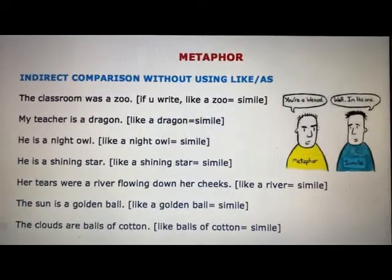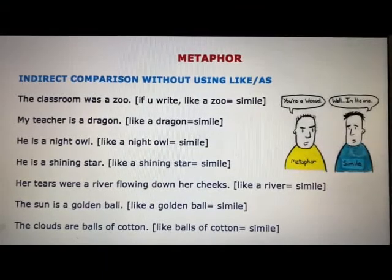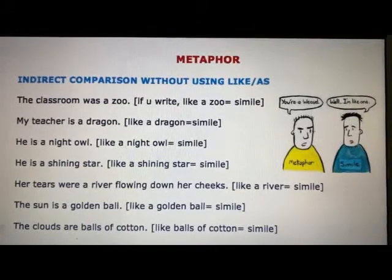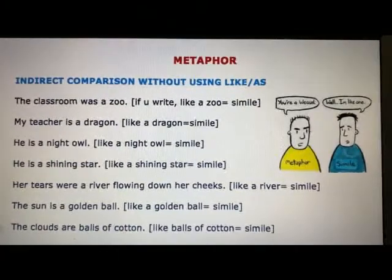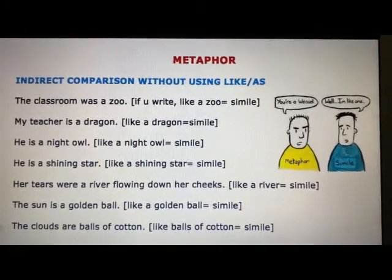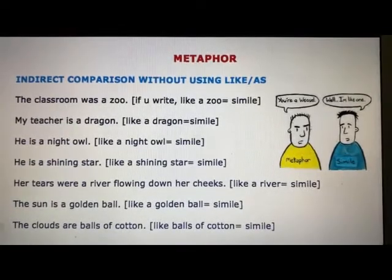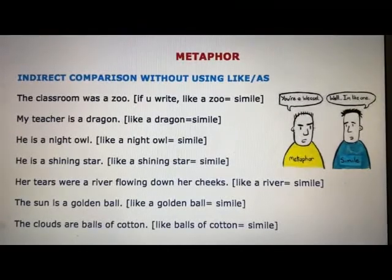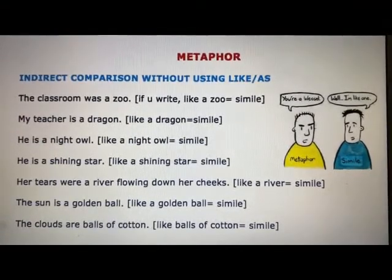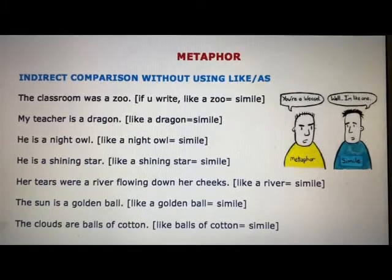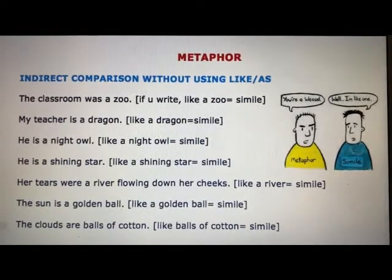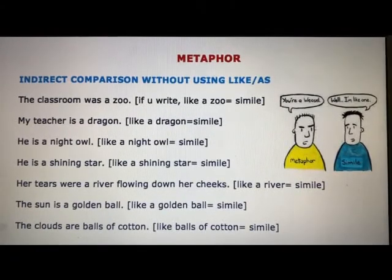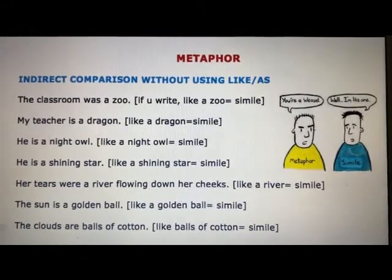The second poetic device is metaphor. Here, there is indirect comparison without using 'like' or 'as.' For example, 'The classroom was a zoo' — the comparison is between the classroom and the zoo without using 'like' or 'as.' If you write 'like a zoo,' that becomes a simile. In the same way, 'My teacher is a dragon' — if you say 'like a dragon,' that becomes a simile; if you say 'my teacher is a dragon,' that is a metaphor.